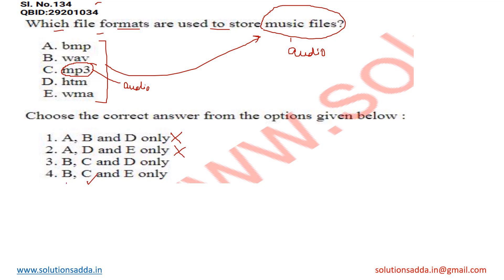Option B is common and also right. So let's look at option D and E. Option D is HTM. What is HTM? HTM is a file extension for the hypertext markup language, used for web page development. It is not related to audio files.